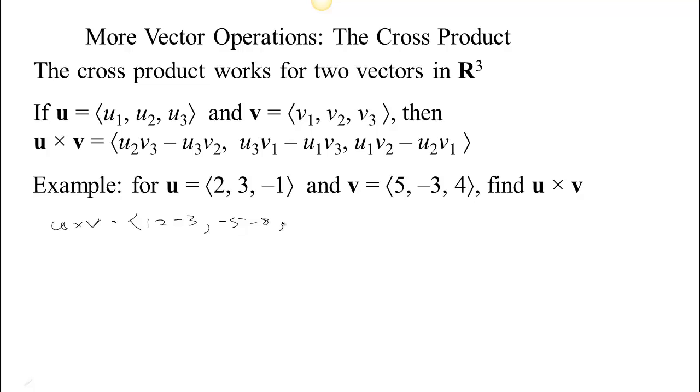And then the last entry is going to be u₁v₂, so 2 times negative 3 is negative 6, minus u₂v₁. 3 times 5 is 15, so negative 6 minus 15. So we put that together, 12 minus 3 is 9, negative 5 minus 8 is negative 13, and negative 6 minus 15 is negative 21.